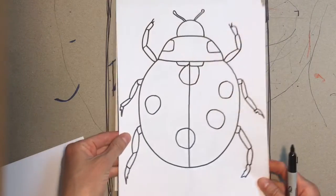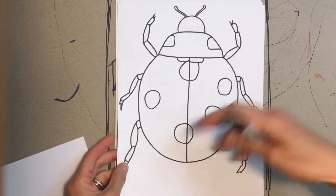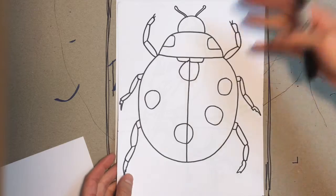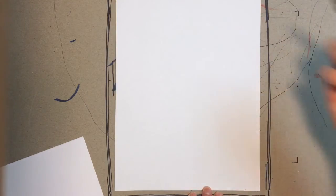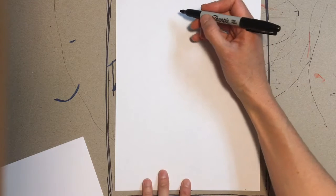This ladybug takes up a lot of space on the page and the bigger it is, the more room you have to color and you can really see all the details. So first thing you're gonna do towards the top of your paper...